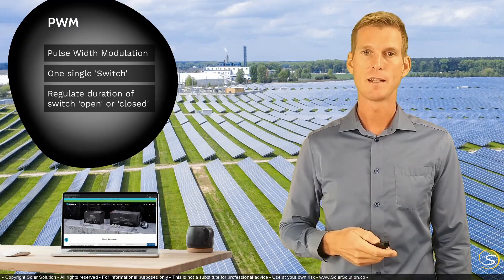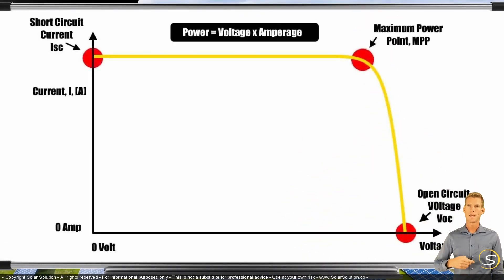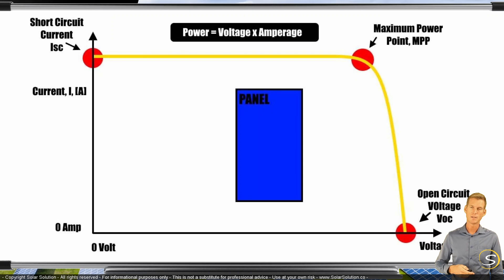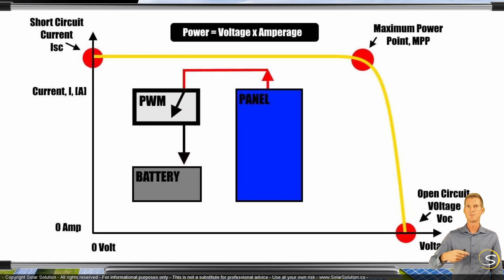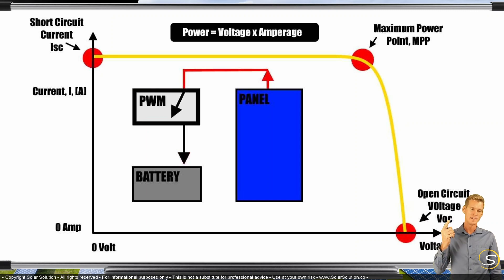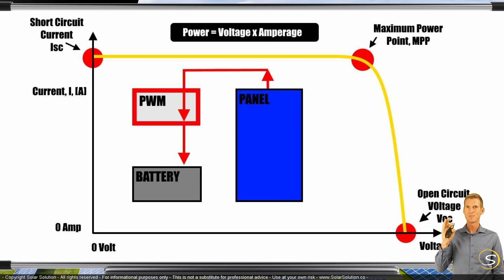Let's look at the whiteboard and draw a simple diagram. We've got the IV curve here — we've seen that before. We've got a panel, a battery, and we connect the panel to the battery and place the PWM charge controller in that circuit. The PWM is then able to open or close the circuit. If the PWM charge controller decides it wants to pull as much power from the panel, it will have the switch closed so all the power flows from the panel towards the battery. In that situation, the voltage of the battery is the same as the voltage of the panel.